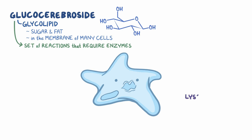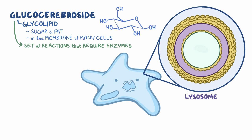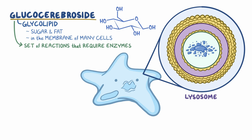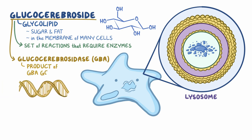Macrophages contain lysosomes, which are organelles that act as the cell's digestive center. Inside lysosomes, large, potentially harmful substances are broken down to be either discharged or reused by the body. One example is glucocerebroside, which is broken down by the enzyme glucocerebrosidase, or GBA, which is a product of the GBA gene.